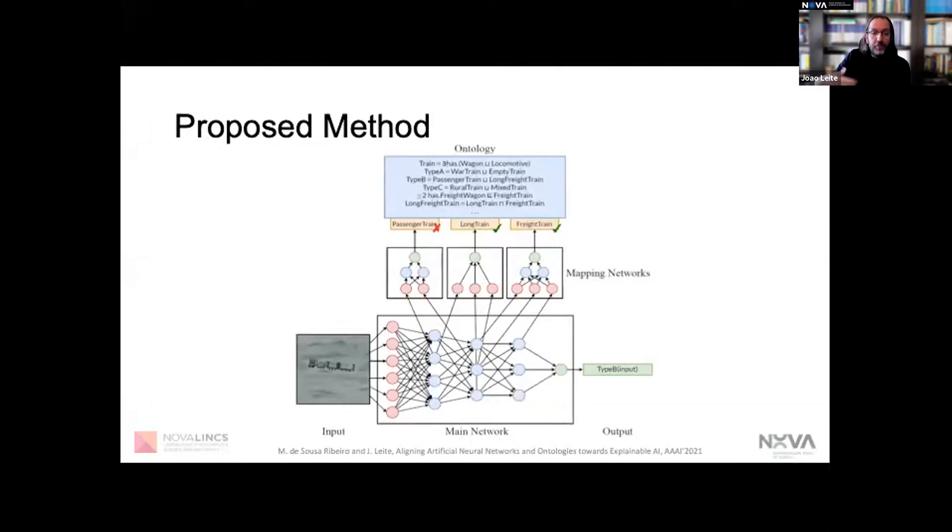When feeding input to a neural network, we can observe, through the use of these mapping networks, whether the corresponding concepts were identified or not. By extracting these concepts, we actually acquire additional knowledge about the neural network's input.